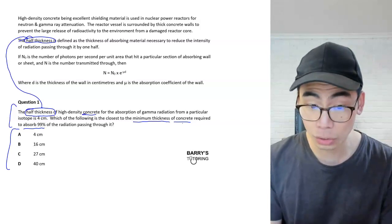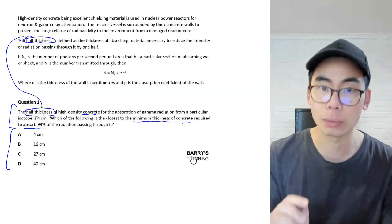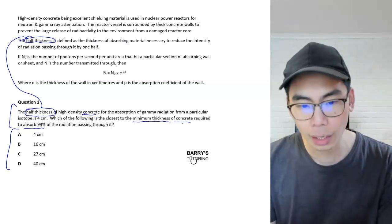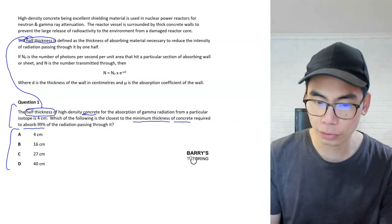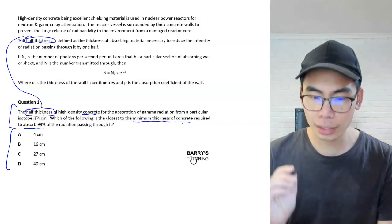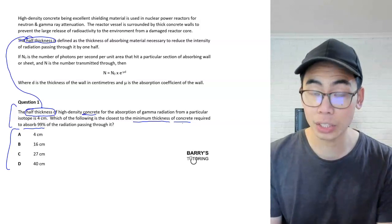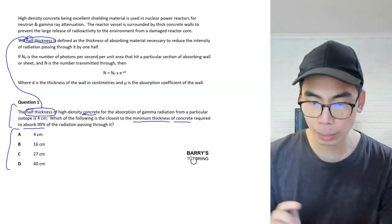Now what's happened here is by following the keywords, we have found the sentence necessary to solve this problem. In actual fact, you don't need to use any of the material above apart from that particular sentence. So the half thickness is the thickness of absorbing material necessary to reduce the intensity of radiation passing through it by one half. So what does that mean? Essentially, if you're trying to pass radiation through this material, half of it is going to get through for that particular thickness.